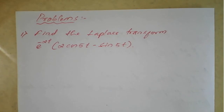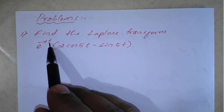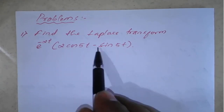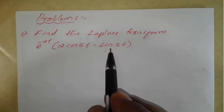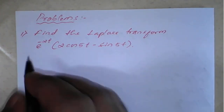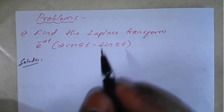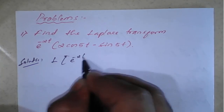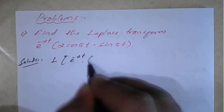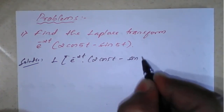The first example: find the Laplace transform of e^(-2t) into 2 cos(5t) minus sin(5t). We will determine which property is going to be applied here. We need to find L{e^(-2t) · (2cos(5t) - sin(5t))}.